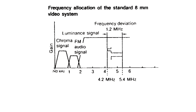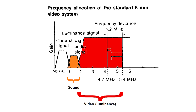In terms of audio, 8mm video employed audio frequency modulation — a method of recording high-quality audio alongside video, similar to Betamax Hi-Fi and VHS Hi-Fi. Initially, audio was recorded only as a single channel.